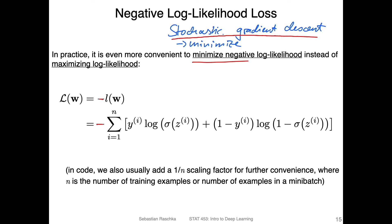Another common practice is to add a one-over-n scaling factor to scale over the number of data points or the mini-batch size, which makes training numerically more stable.